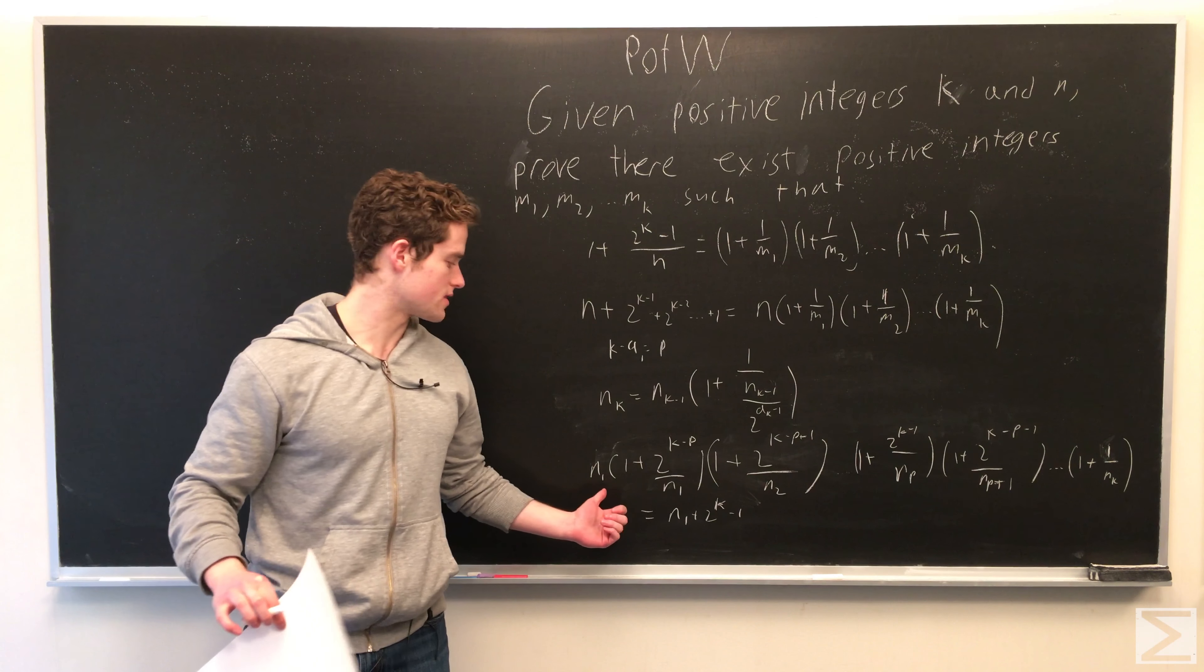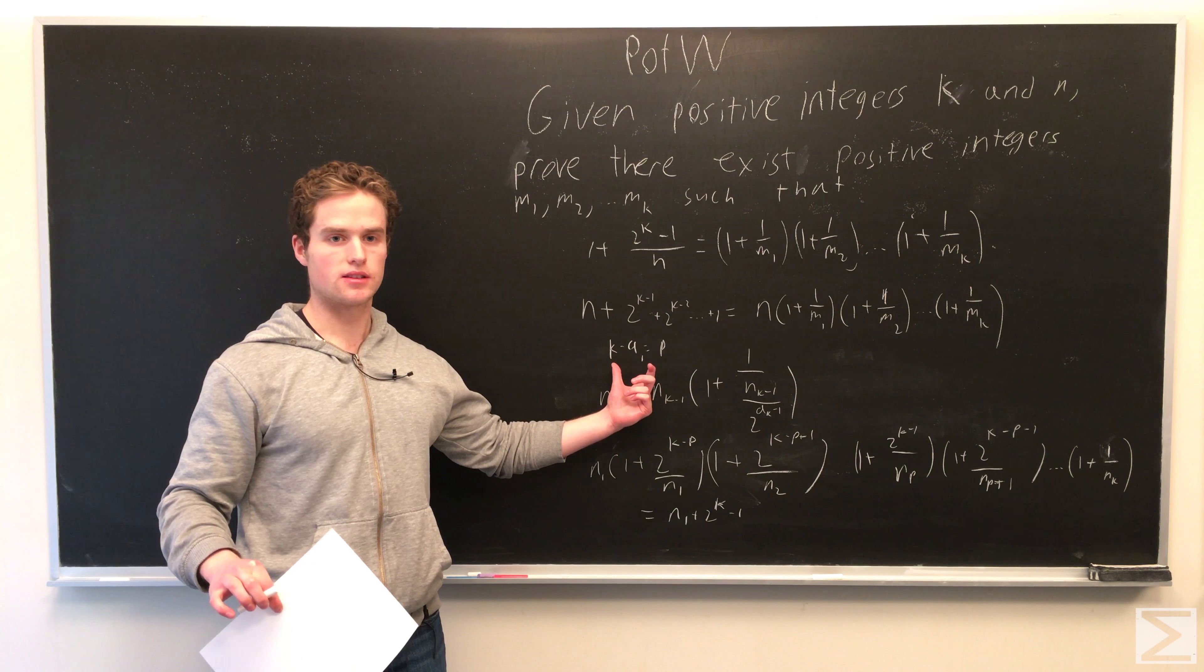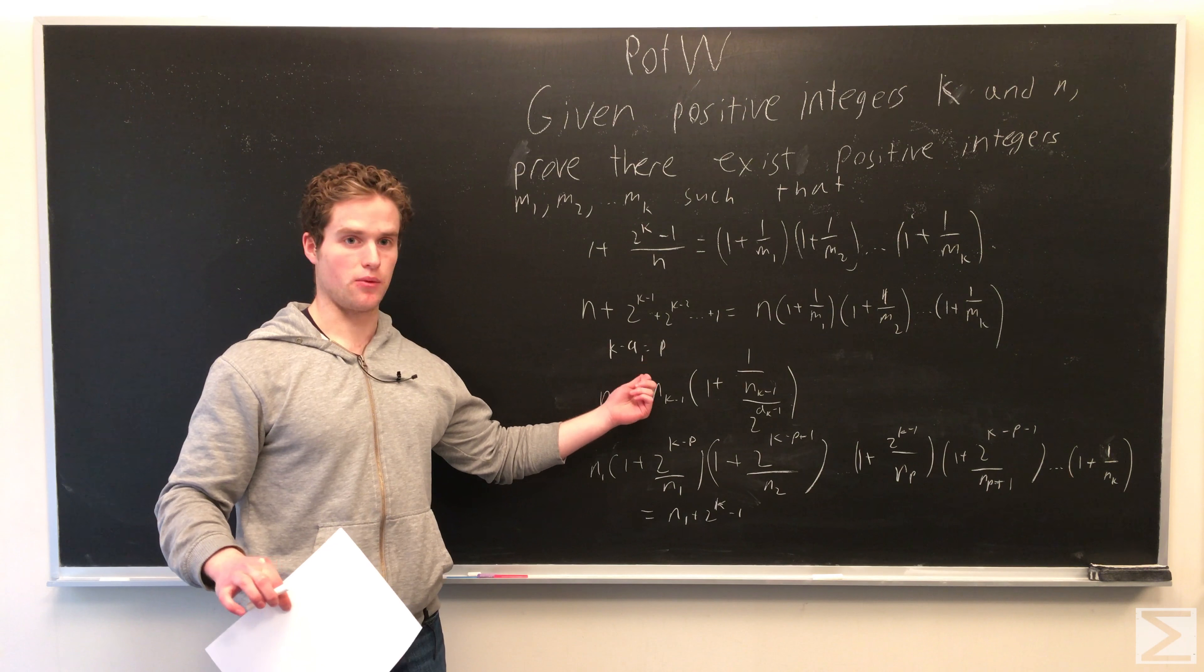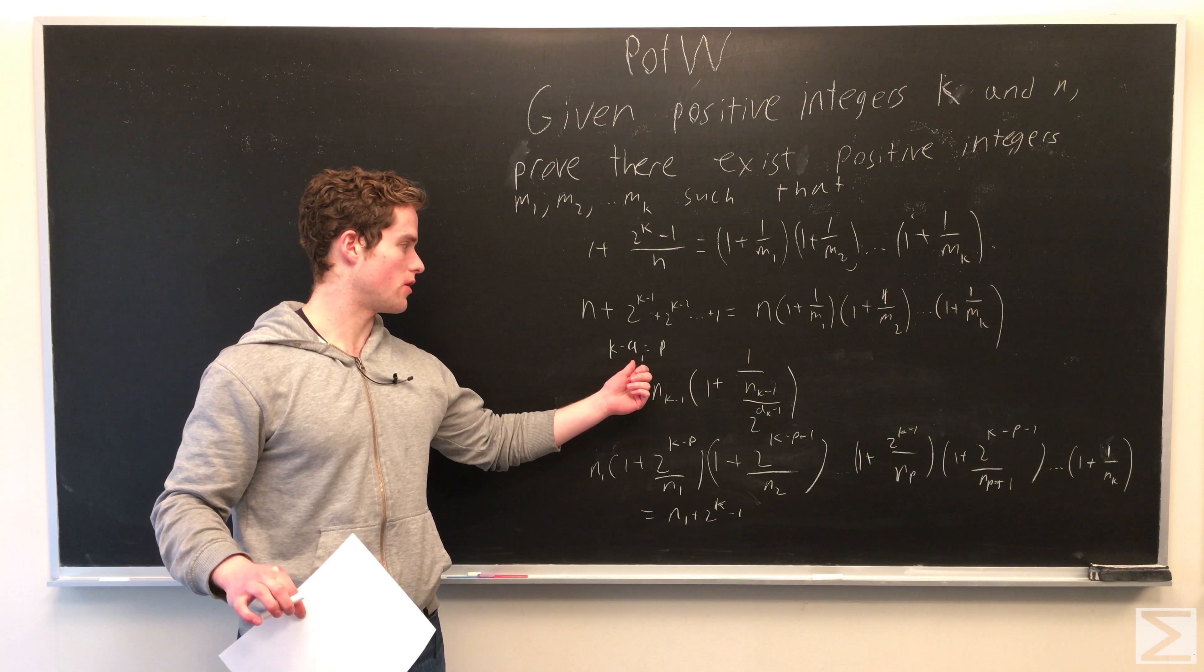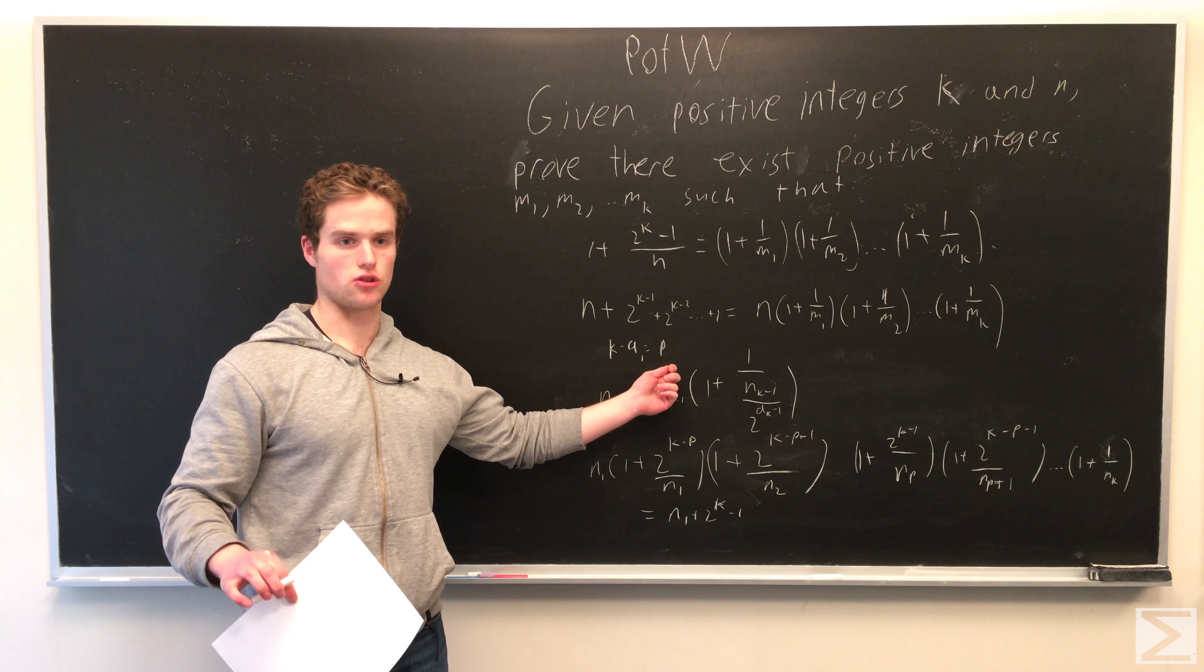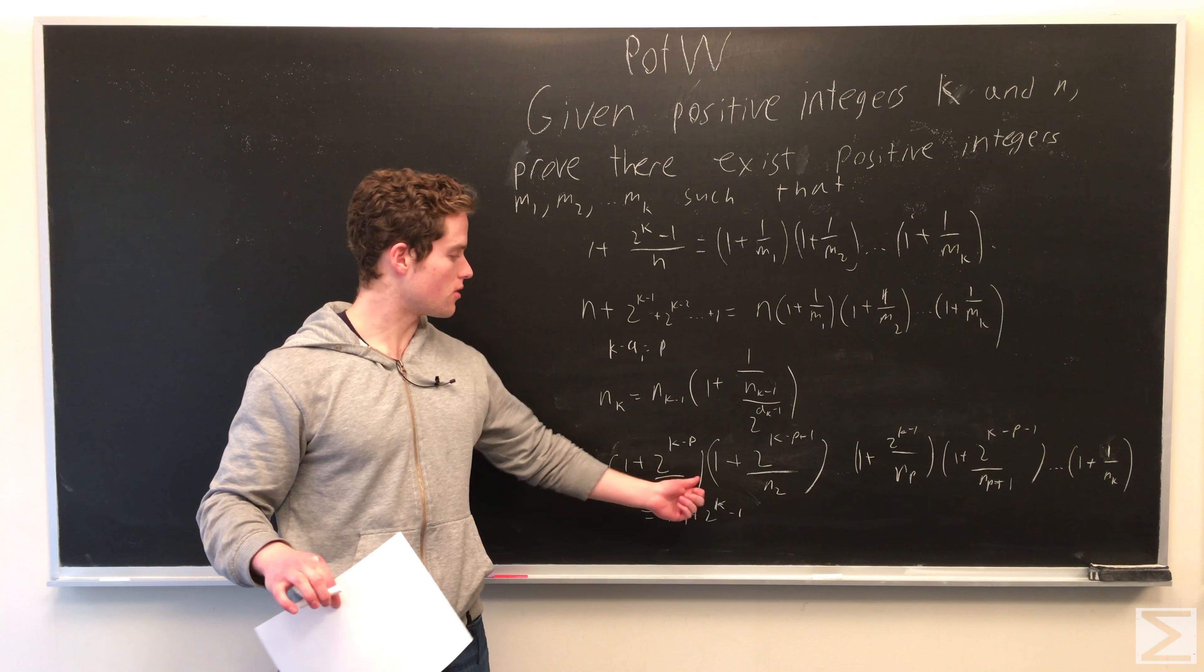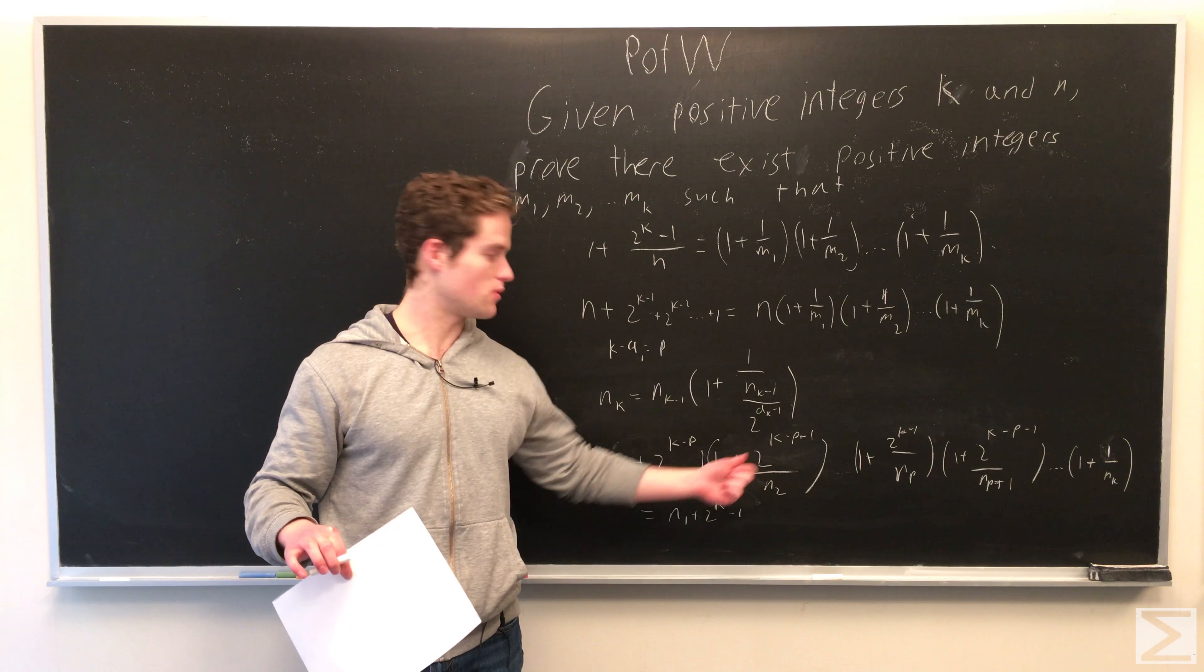So writing it out explicitly, we can say n1 times 1 plus 2 to k minus p, where we say k minus p equals a1, or k minus a1 equals p. So the difference between k and a1 is this integer p. So 1 plus 2 to k minus p over n1 times 1 plus 2 to k minus p plus 1 over n2.